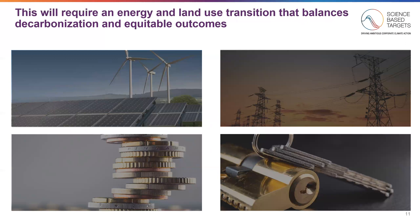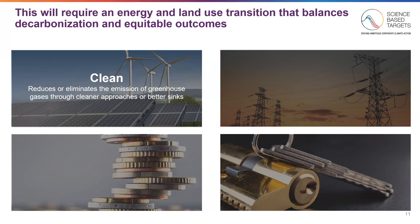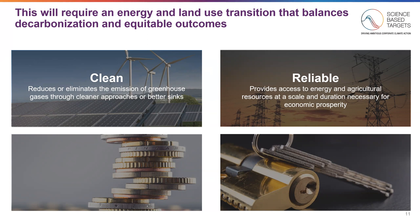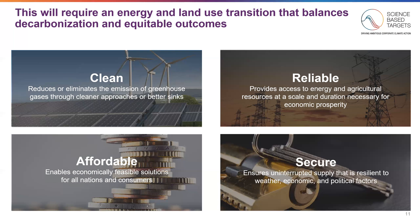Taking action is important, but we must realize that making this energy and land use transition requires balancing decarbonization and equitable outcomes. First, we need the net-zero transformation to be clean — reducing or eliminating greenhouse gas emissions through cleaner approaches and better sinks. Second, we need reliable access to energy and agricultural resources at the scale necessary for economic prosperity, for both the developing and developed world. Third, we need affordable solutions that enable economically feasible options for all nations and consumers, bringing down the green premium. Finally, a secure climate mitigation plan must ensure uninterrupted supply resilient to weather, economic, and political factors.